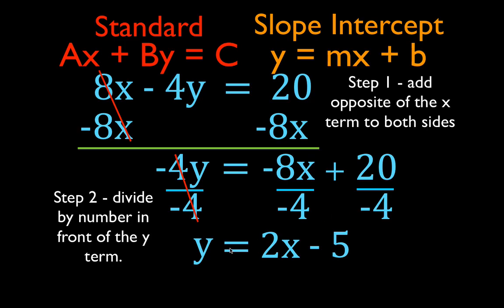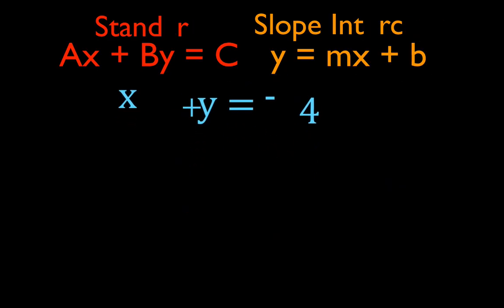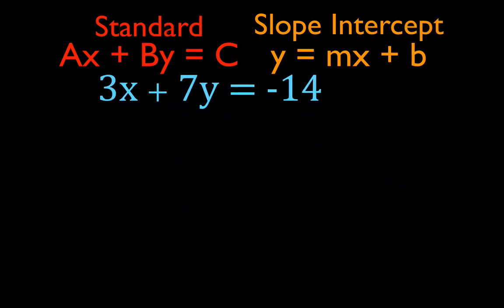That is the equation in the slope-intercept form: y equals mx plus b. m is the slope — the slope is 2. b is the y-intercept — the y-intercept is minus 5. Now we are going to do a couple more; we are going to go a little faster using the same two steps.